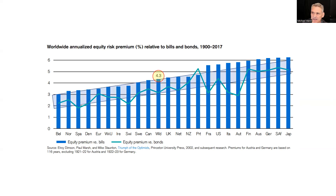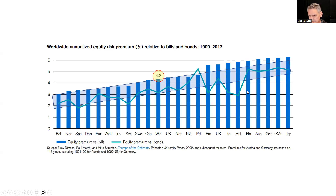Clearly, we should not expect the same market premium for different countries. This data includes two world wars, which were largely fought in Europe, so you see poor market risk premiums for countries like Belgium, Norway, Spain, and Denmark, and higher returns for Japan, South Africa, and Germany. So we need to look at particular currencies and different markets.